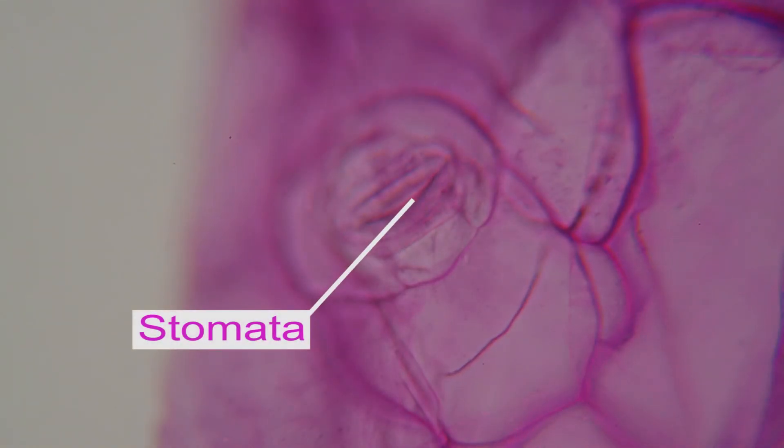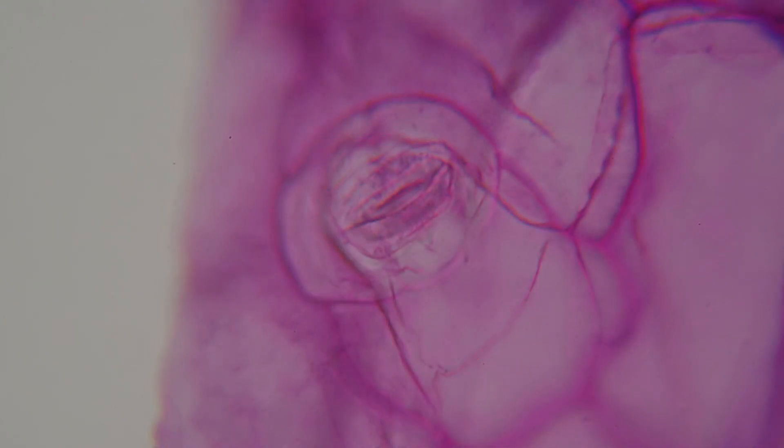Anyway, that is a stomata at 400x zoom and the function is to let gas into the plant leaf for photosynthesis. Thank you for watching.